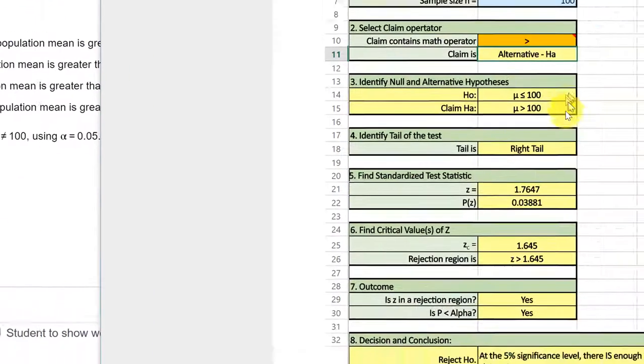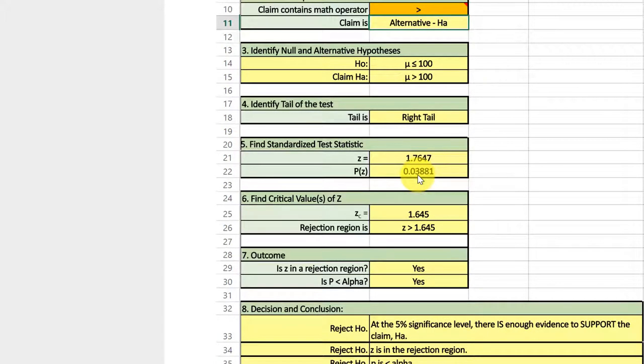The p value is 0.038, and that rounds to 0.039. They want three decimal places, which is the answer they want there.